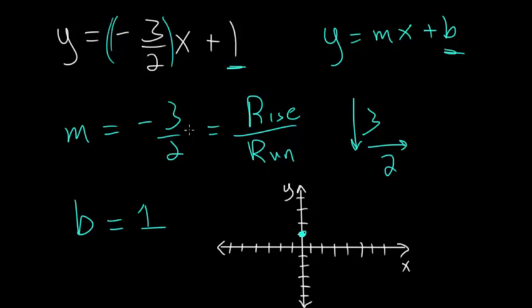And then based off our slope, we know that our rise is negative 3, so we go down 3, 1, 2, 3. And then we run 2, or we go to the right, 1, 2. So we have our second point, and now we can connect these with a line here. The line is not quite perfect, but it'll give you a rough idea of how to do this.